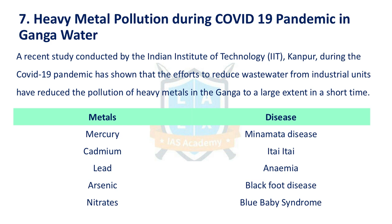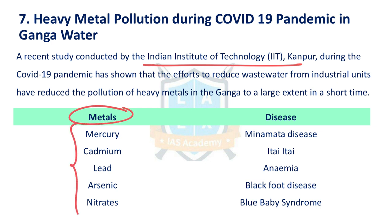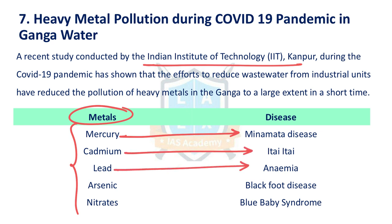The next issue is heavy metal pollution in India. An IIT Kanpur study revealed that during the COVID-19 pandemic, due to lockdown measures and closure of industrial units, heavy metal pollution reduced to half. Heavy metals include mercury, cadmium, lead, arsenic, and nitrates. They cause various diseases: mercury causes Minamata disease, cadmium causes Itai-itai disease, lead causes anemia, arsenic causes blackfoot disease, and nitrates cause blue baby syndrome. When heavy metal concentrations are lower, incidences of these diseases also reduce.